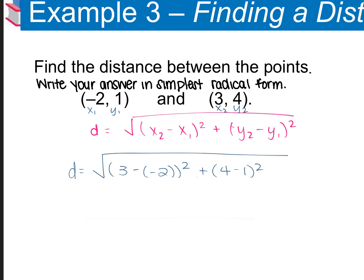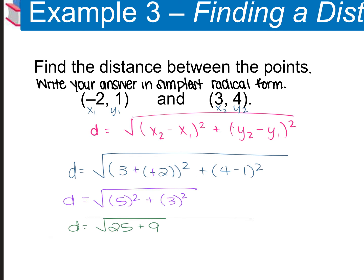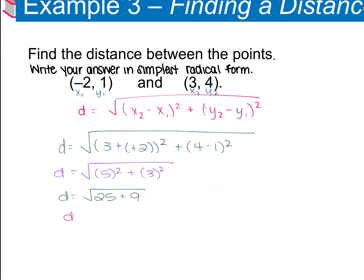That gives you the square root of 5² + 3², which is the square root of 25 + 9, simplifying to the square root of 34. Since 34 is divisible by 2 giving 17, and 17 is prime, you cannot simplify the square root of 34 any further. You leave it as the square root of 34.